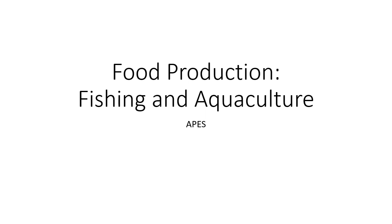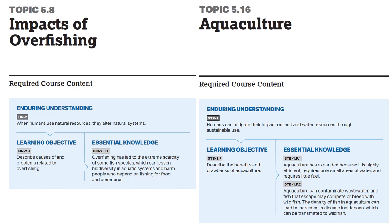Hi everyone, welcome to this PowerPoint on fishing and aquaculture for AP Environmental Science. We are looking at two learning objectives, and like much of this unit, we're contrasting the unsustainable methods with a more sustainable method. So topic 5.8 is impacts of overfishing, and 5.16 is aquaculture.